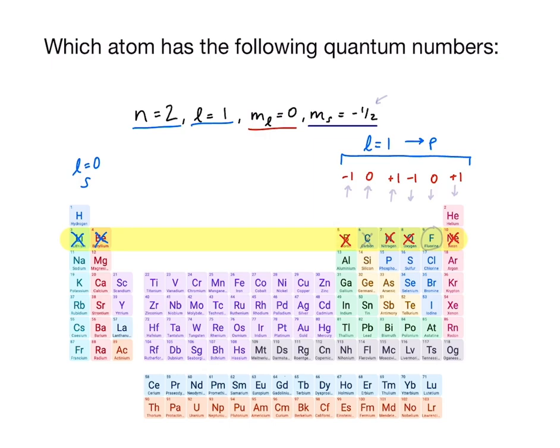So we have spin up, spin up, spin up, and then we pair up our electrons with spin down, spin down, spin down. Since we know it's negative 1 half, we know that it is spin down, so our element is fluorine.